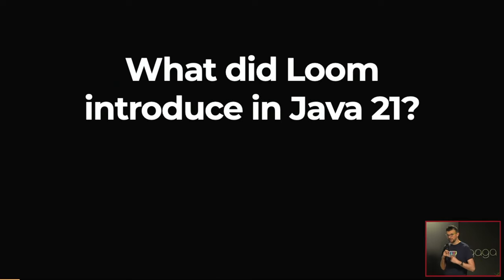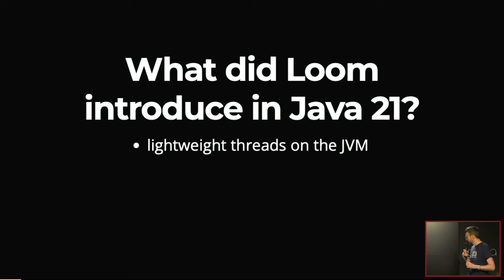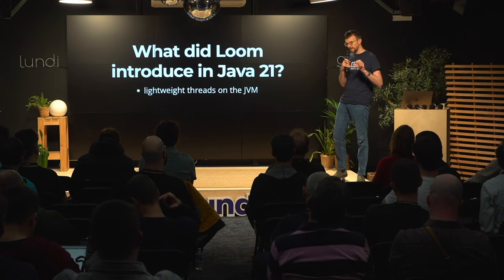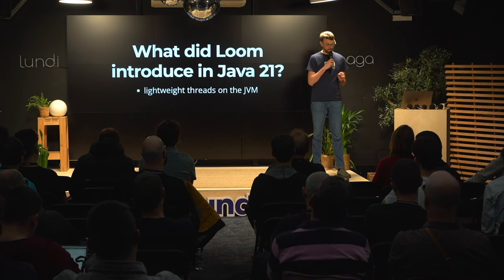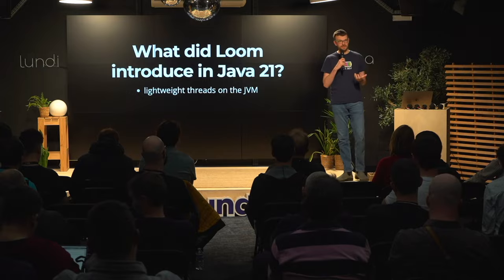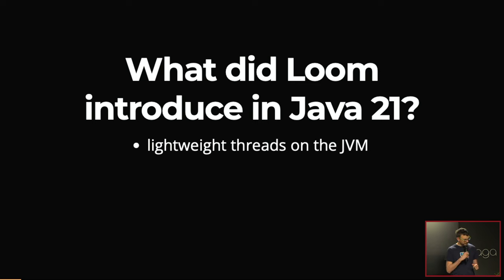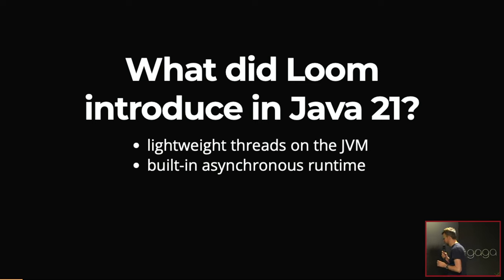Now Java 21 enters the stage and introduces something called virtual threads as the first part of Project Loom. Virtual threads, also called lightweight threads, behave and look very similarly to old Java threads. You can have hundreds, thousands, or even millions of these threads running on a single JVM. You couldn't do that with platform threads — you would run out of memory or hit operating system limits very quickly. These threads are very cheap to create, consume little memory, and are very fast to switch between.